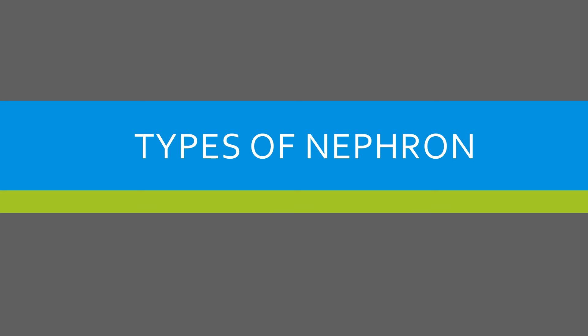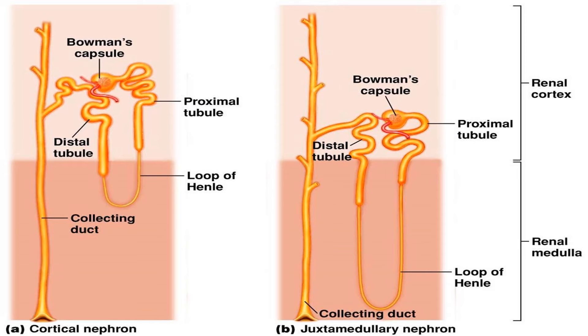Assalamu alaikum guys and welcome to my YouTube channel Biology Articles and MCQs. Today we are going to start the types of nephrons. If you have not studied the structure of the nephron and kidney, I will give the link in the description box. There are two main types of nephrons: the first one is the cortical nephron and the second one is the juxtamedullary nephron.